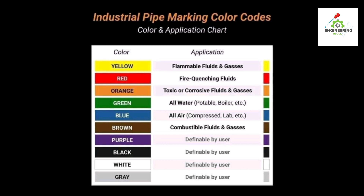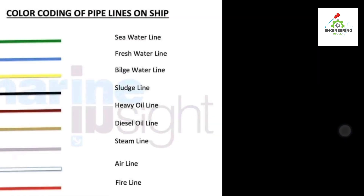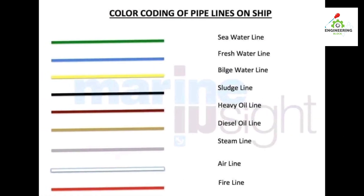Black, white, and gray are all defined by the user. Now we will discuss the color coding of pipelines on ships. On ships, different types of color codings are used.